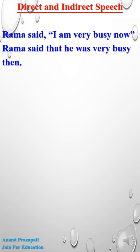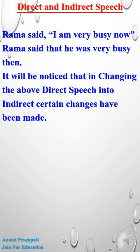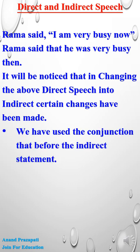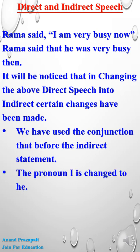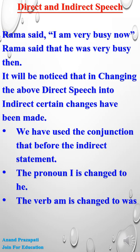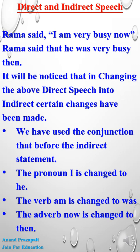It will be noticed that in changing the above direct speech into indirect, certain changes have been made. First, we have used the conjunction 'that' before the indirect statement. Second, the pronoun 'I' is changed to 'he'. Third, the verb 'am' is changed to 'was'. Last, the adverb 'now' is changed to 'there'.